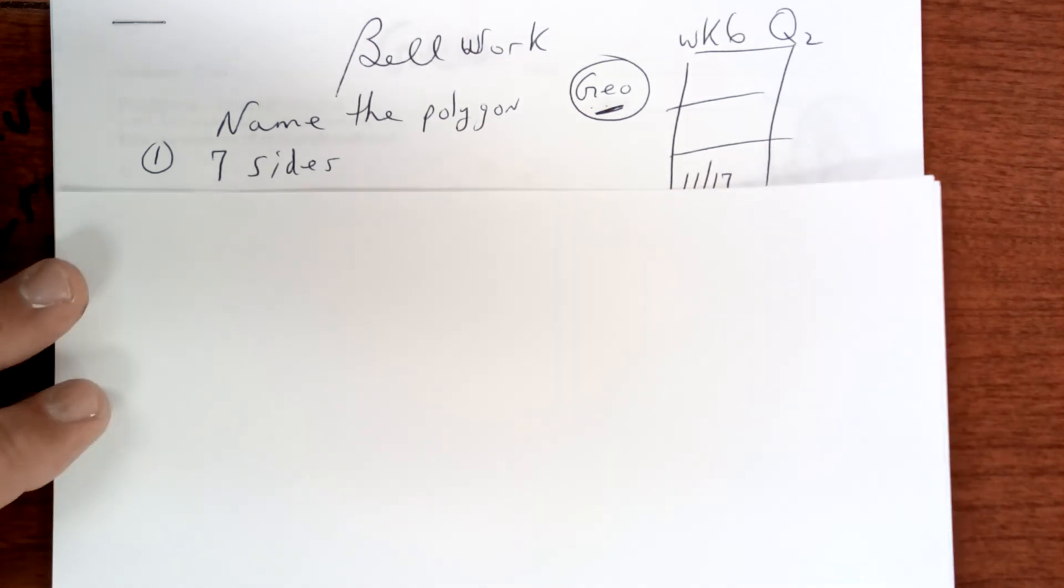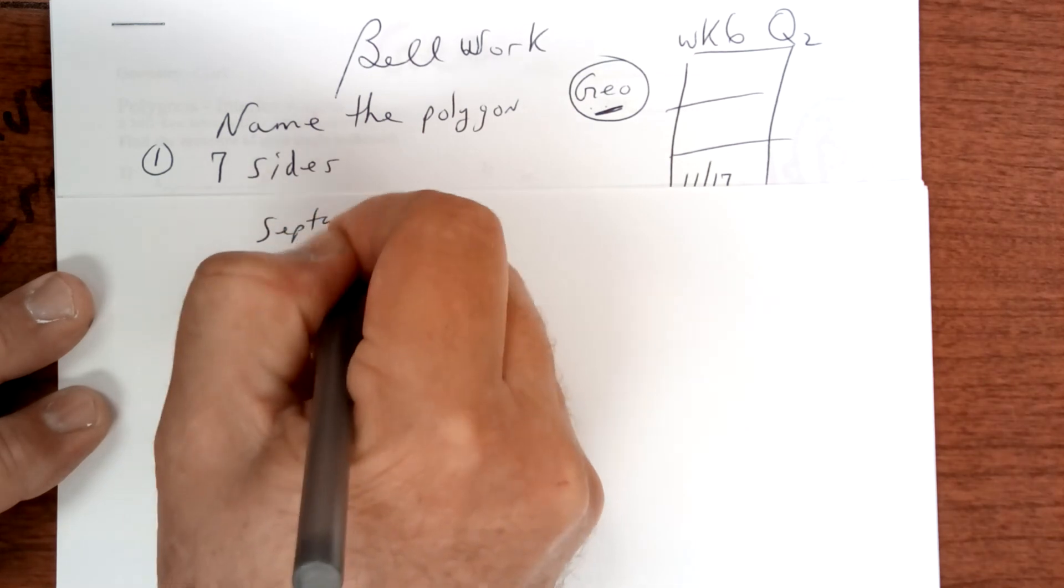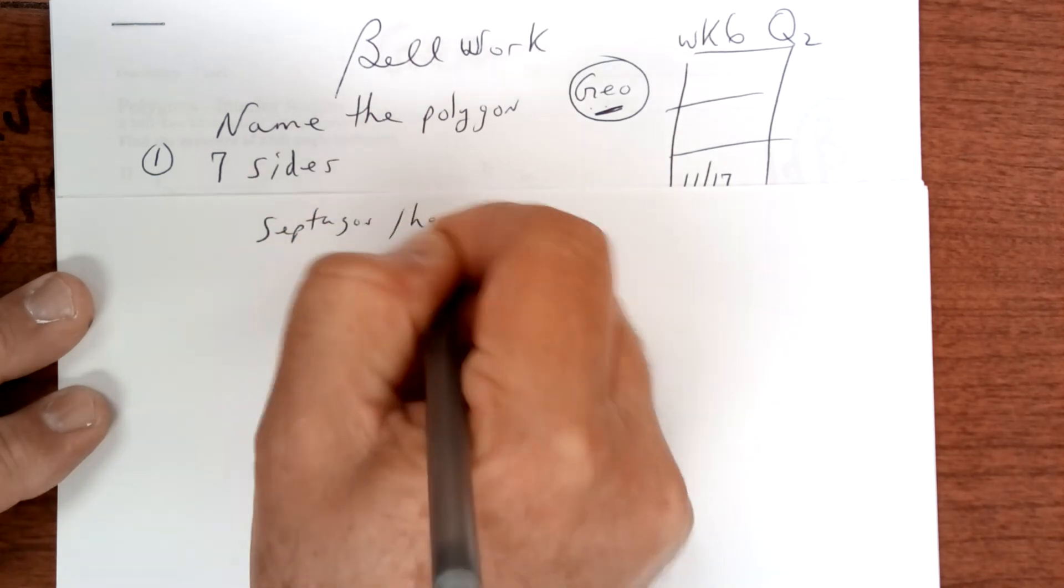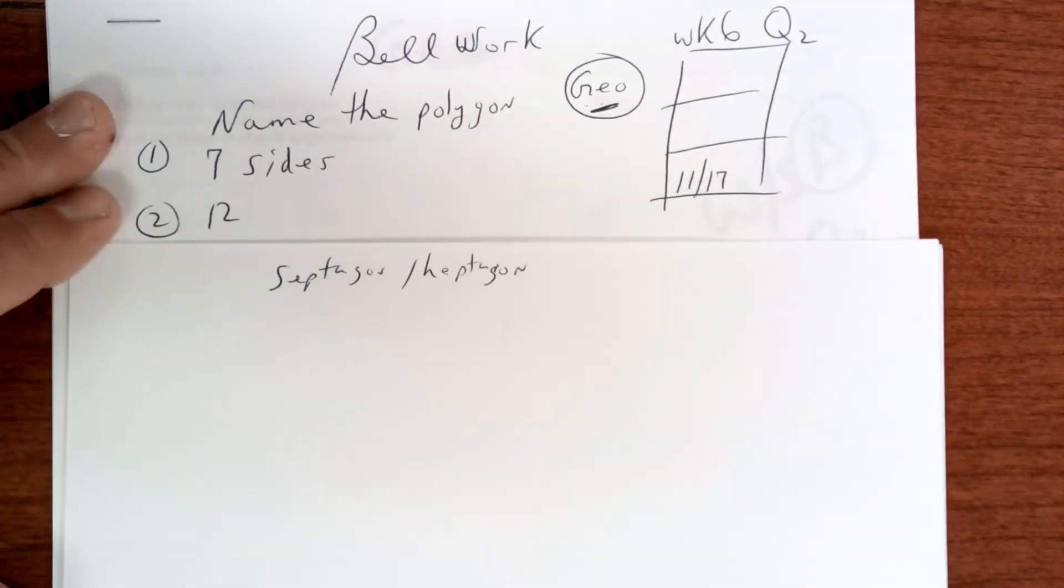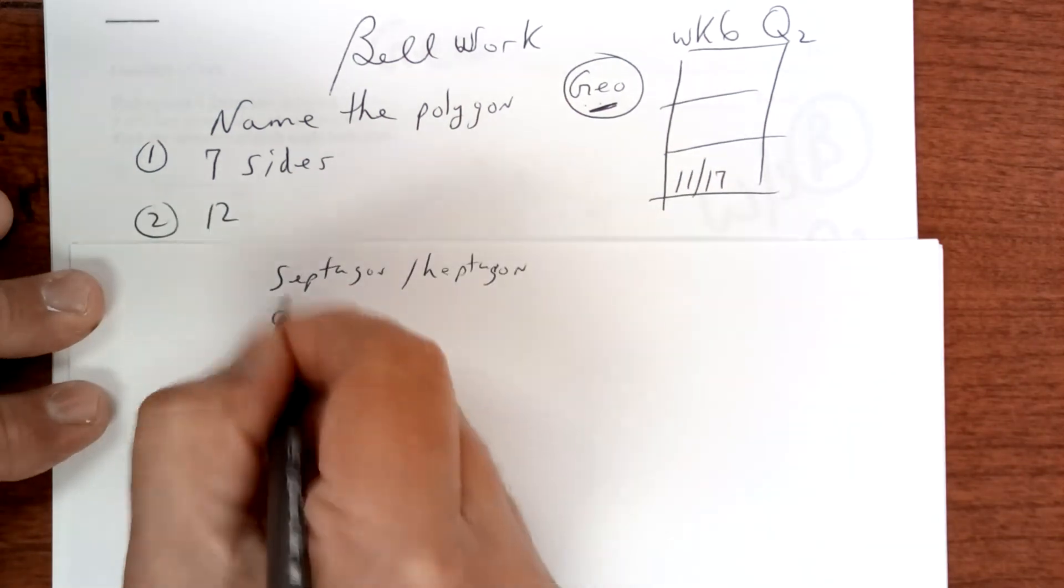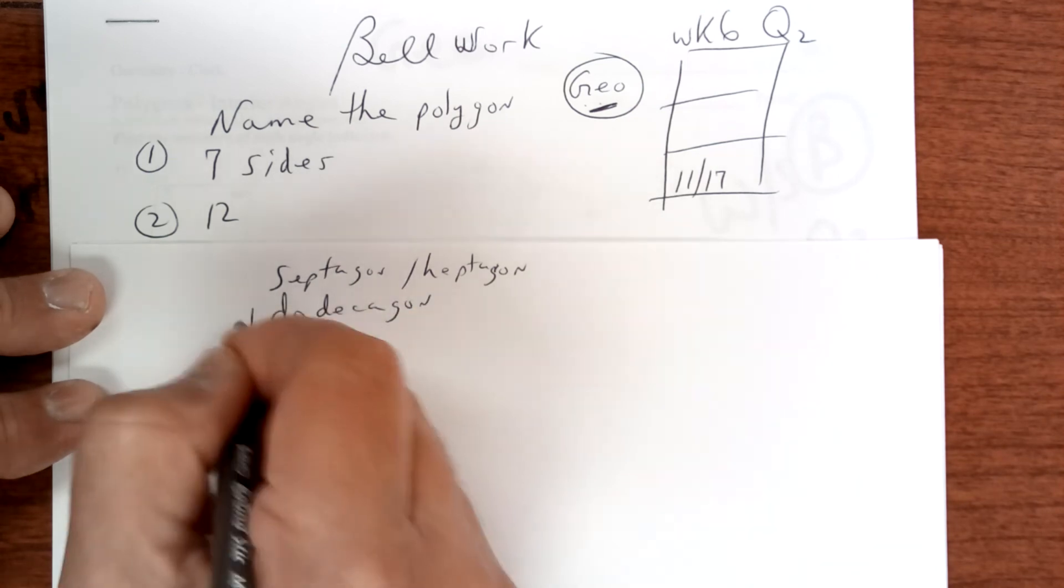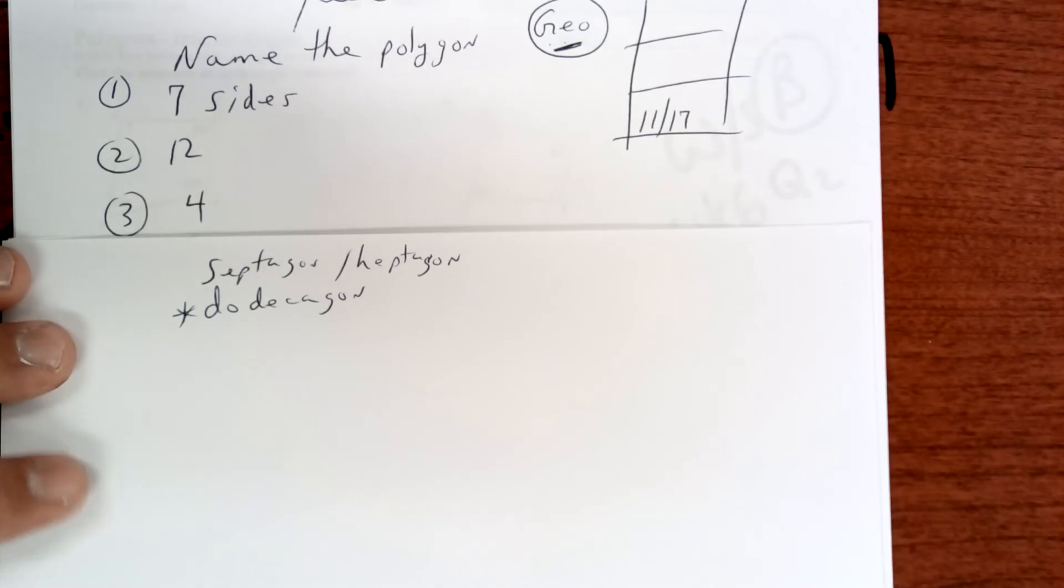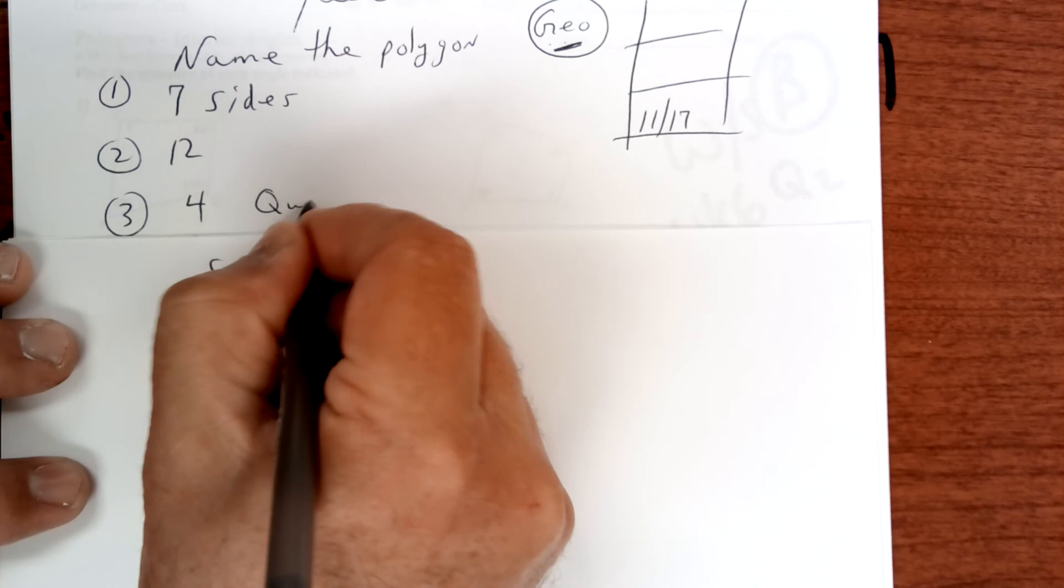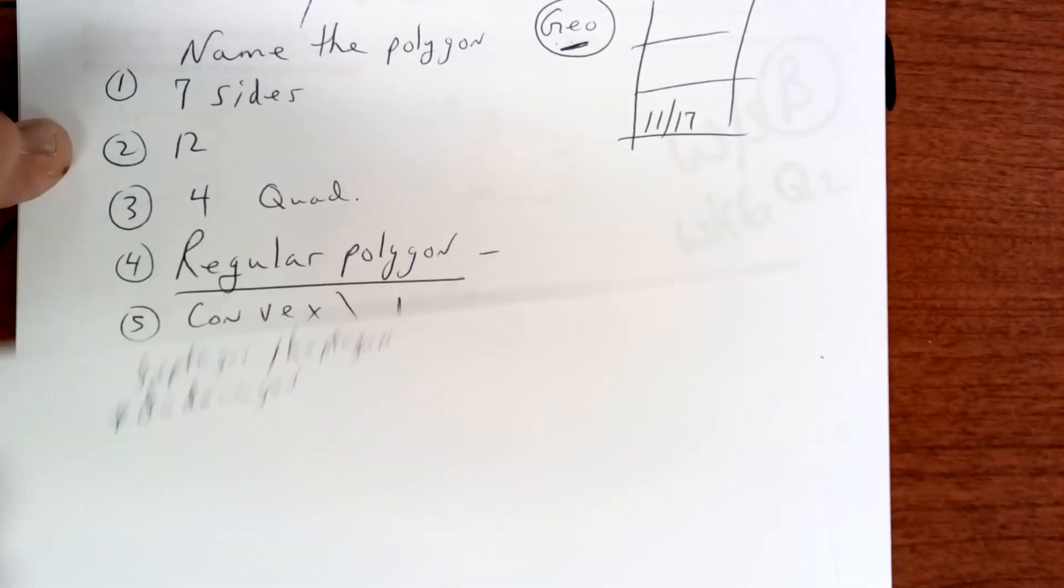It's either a septagon or a heptagon. Either one of those should work. Twelve sides is a dodecagon - make sure you know that one. A four-sided one is not a square, it is a quadrilateral, a four-sided figure.